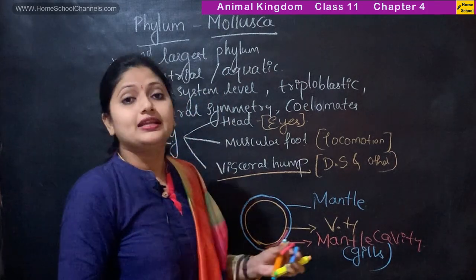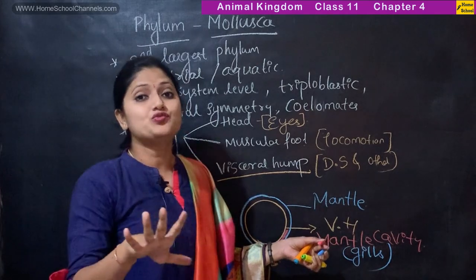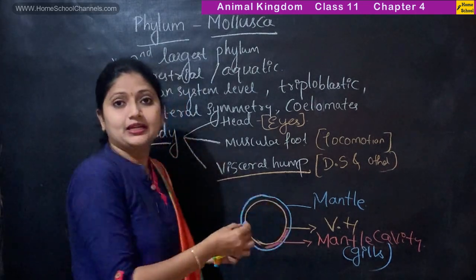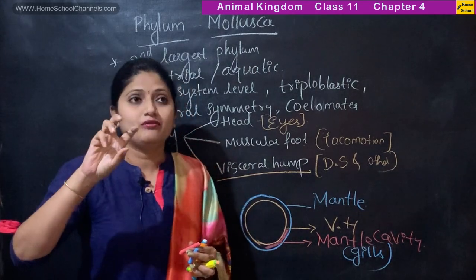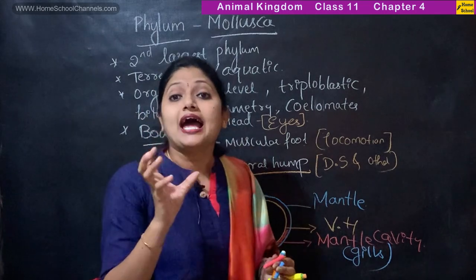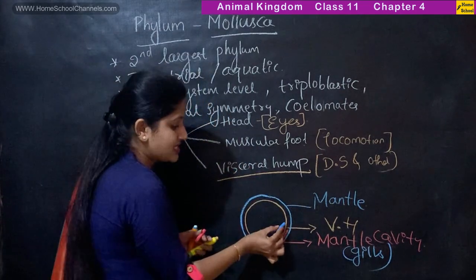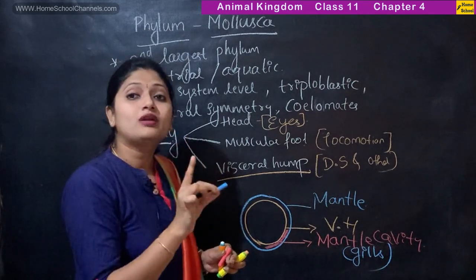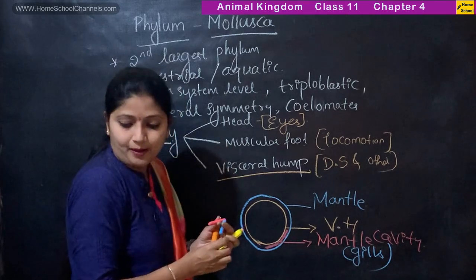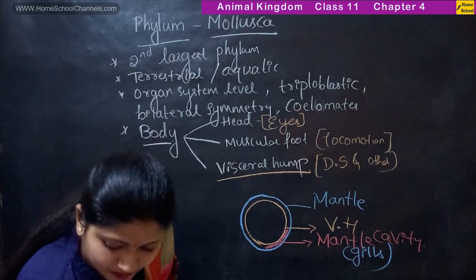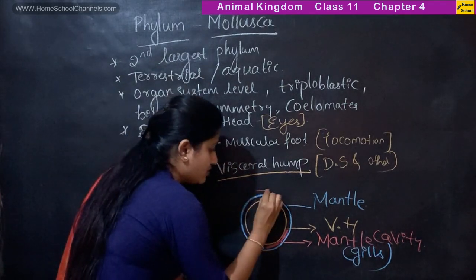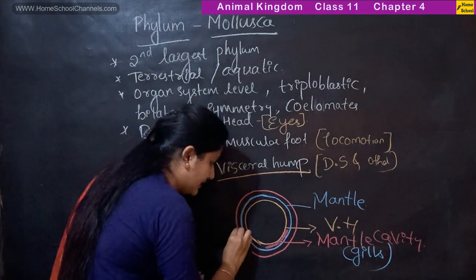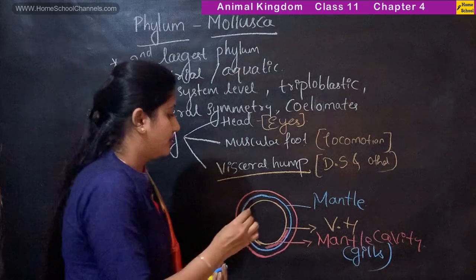In the mantle cavity, gills are usually present. These gills function in respiration as well as excretion. The mantle in turn secretes one more hard layer around itself, which is a calcareous substance. This hard outer layer is called the calcareous shell.